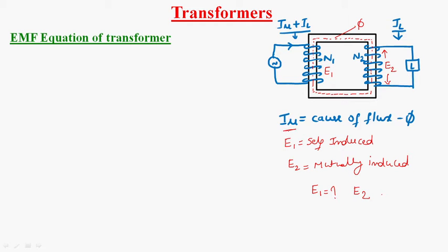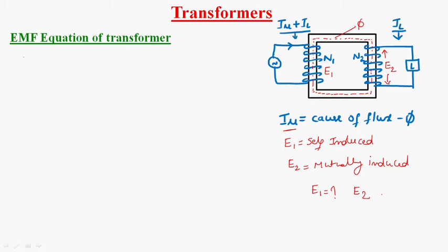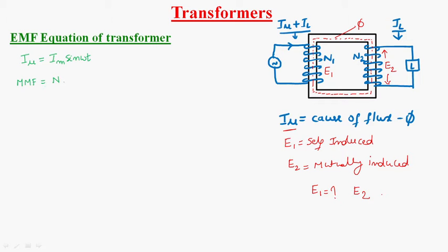I_mu is the alternating nature of current flowing through the circuit, which is the main cause for the production of flux, and that is given by: I_mu = I_M sin(ωt), where I_M is the maximum amplitude of current. From that, the MMF (magnetomotive force) in the primary winding is given by: MMF = N1 × I_mu = N1 × I_M sin(ωt).